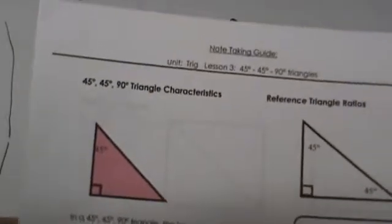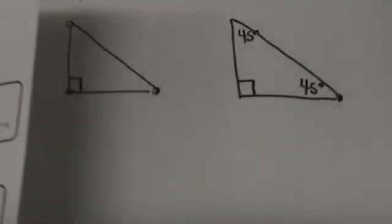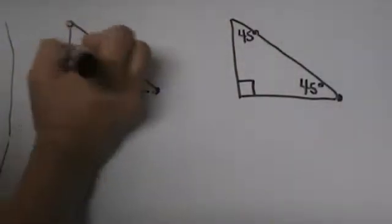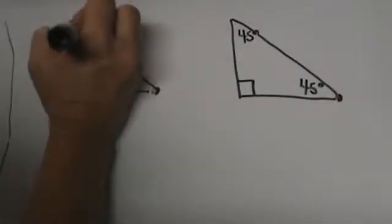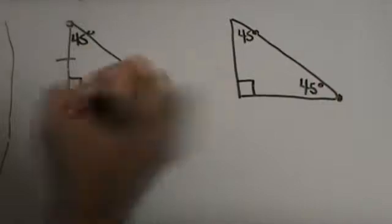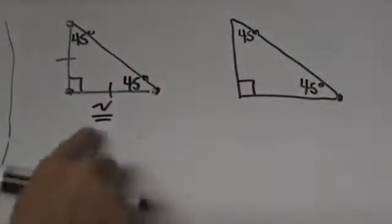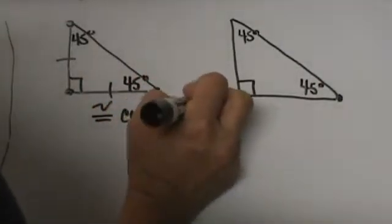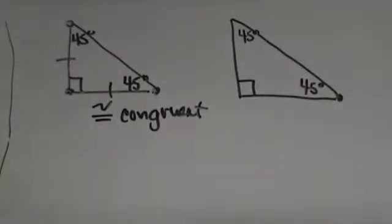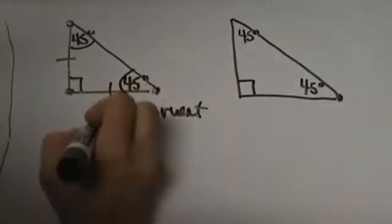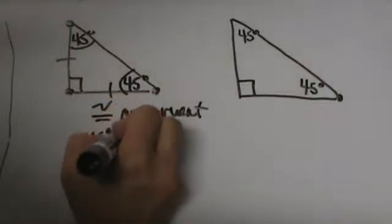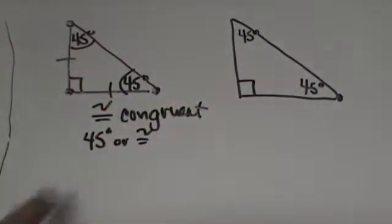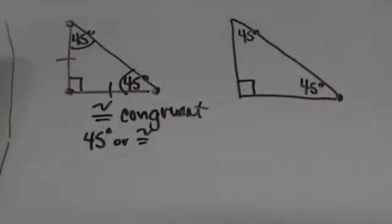Hopefully you have printed your note taking guide out. We are looking at the 45-45-90 special right triangle rules. In a 45-45-90 triangle the legs are congruent — it is an isosceles triangle. The symbol for congruent is an equal sign with a wavy line, or you can write the word congruent. Two of the angles are 45 degrees each, and with the right angle they measure 45-45-90 degrees.